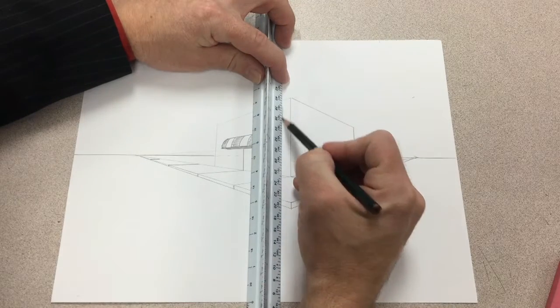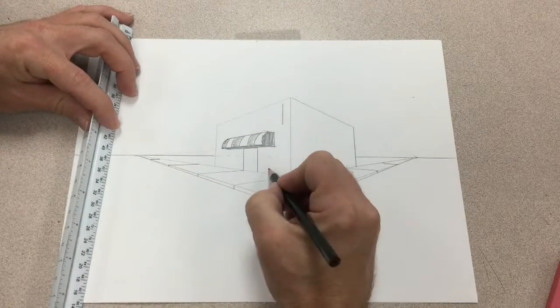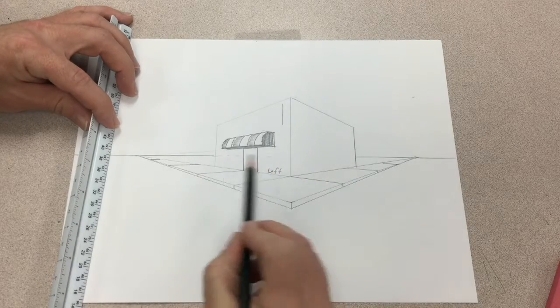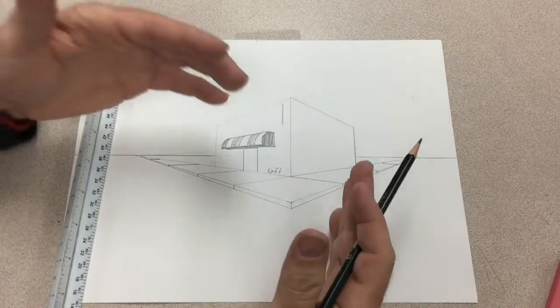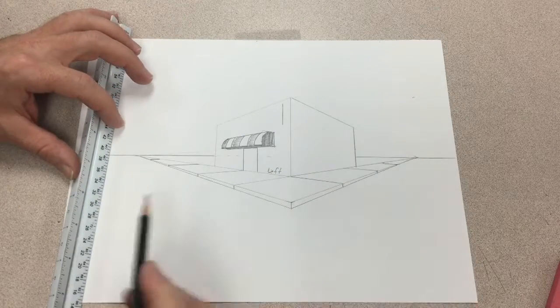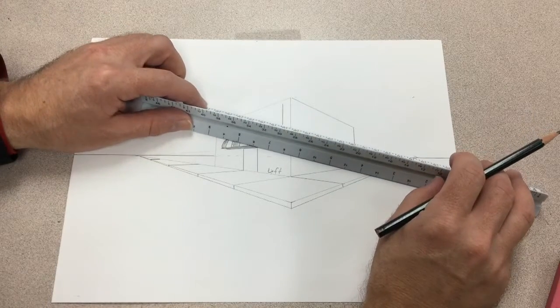What I mean by opposite vanishing point is I'm drawing on the left side of my building. So whenever I draw on the left side of my building and I want something to look like it sticks off of the building, we're going to use our opposite vanishing point. So I'm going to go back to my right vanishing point and we're going to extend that out.